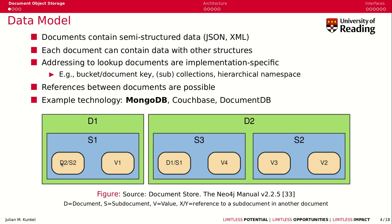A document can also contain references between different documents. So sub-document 1 has a reference to document 2, sub-document 2. How we can find a document initially is implementation-specific. There are various solutions — you can have, for example, a bucket, a simple bucket-document key solution, where you identify the bucket and then specify a key. There are also ways of organizing collections in hierarchical namespaces, and so forth.